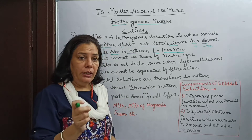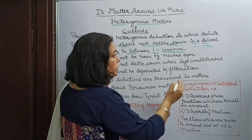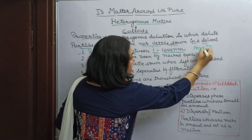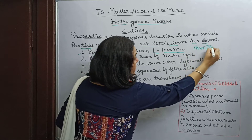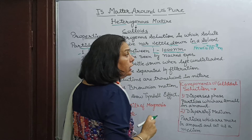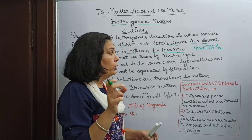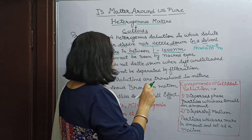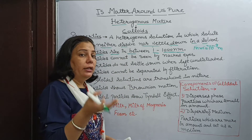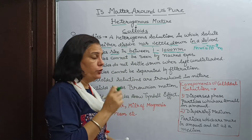Now, what is the relationship between meter and nanometer? Actually, 1 nanometer is equal to 10 raised to the power minus 9 meters. So the particles' size is so small that they are neither suspended nor uniformly dissolved.